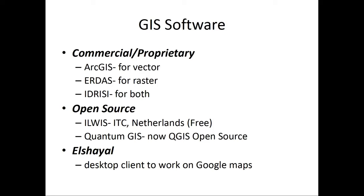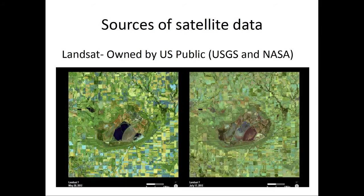In terms of open source, Ilwis at ITC Netherlands is a free source and has been available since 2012 in a big way. Quantum GIS, now called QGIS, is an open source software that has enormous potential for use in agriculture. I also want to mention El Shell, a desktop platform recently developed in Egypt in the Arab world to work with Google Maps, which also has a great deal of potential in agriculture.